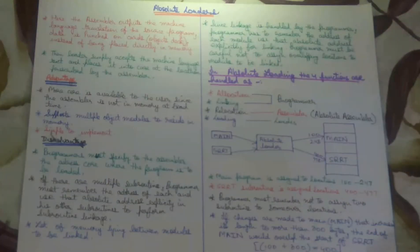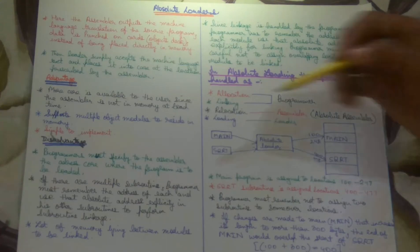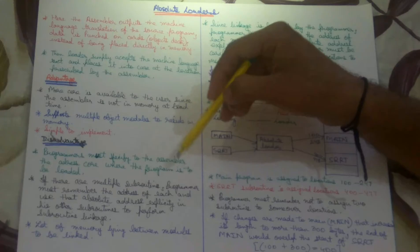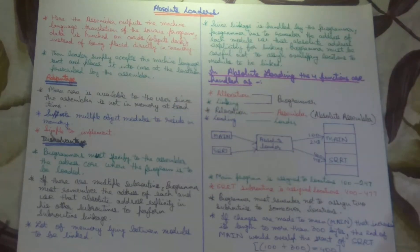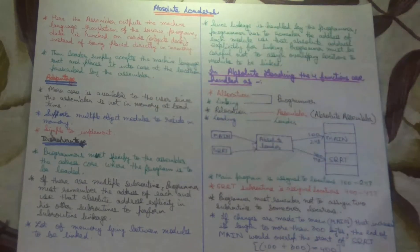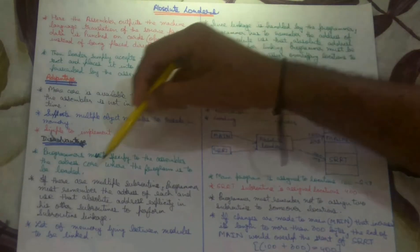What are the disadvantages? Programmers must specify to the assembler the address in memory where the program is to be loaded. The loader is told by the assembler where to load the program. Similarly, the programmer tells the assembler the memory address where the program should be loaded.